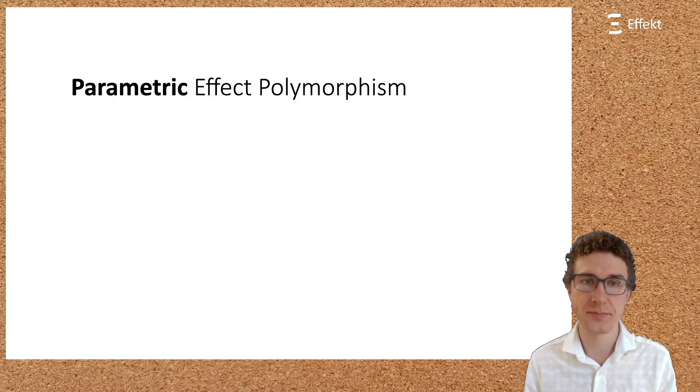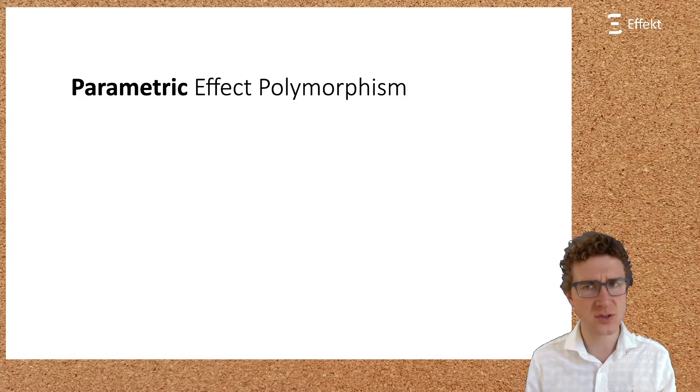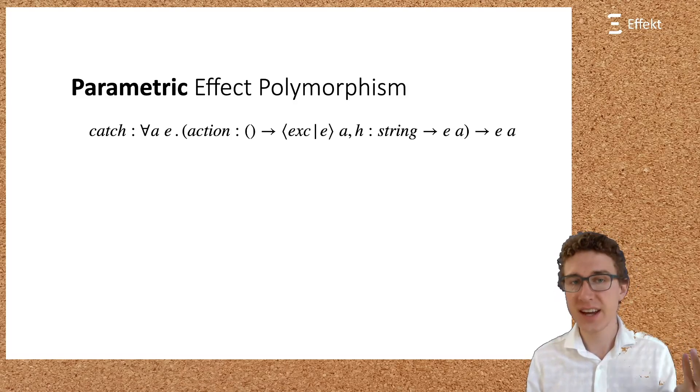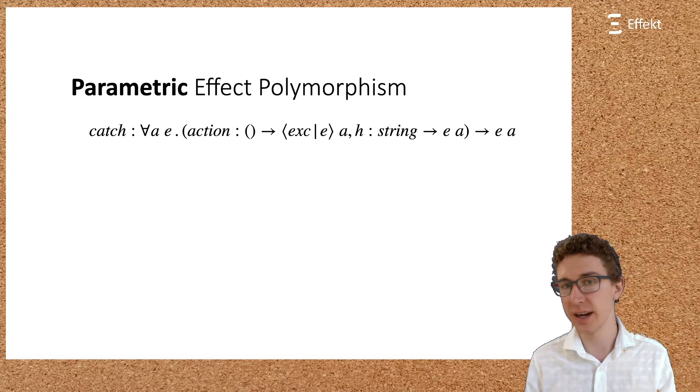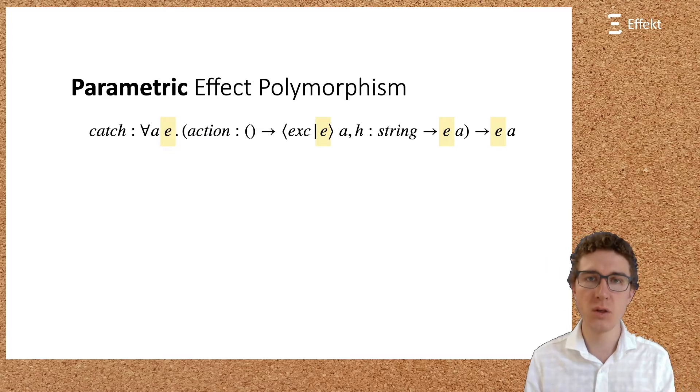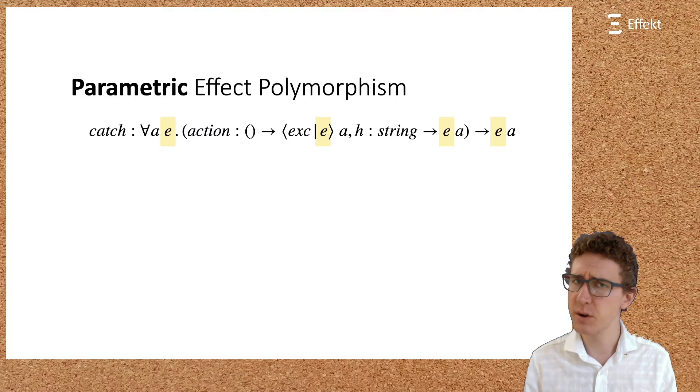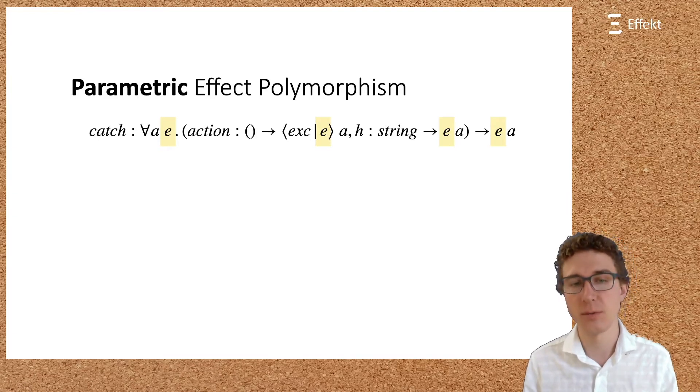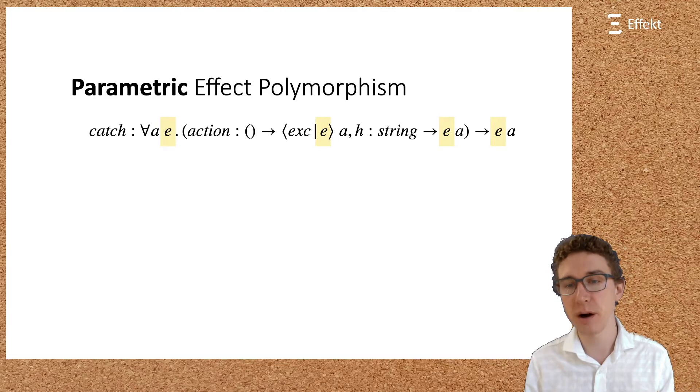But what is Effect Polymorphism? Let us consider this example from Danlein's paper on COCA that illustrates parametric effect polymorphism. The catch function is polymorphic in both the value type A and the effect row E. It expects two argument functions, an action and a handler, and uses the handler to remove the exception effect from action. Both, action and handler, can have additional effects E. We call this form of effect polymorphism parametric effect polymorphism since catch is parametric in E. Parametric effect polymorphism means that we explicitly bind and reference effect variables, E in this case.